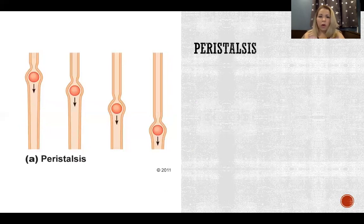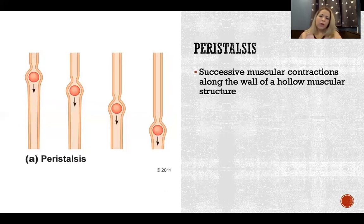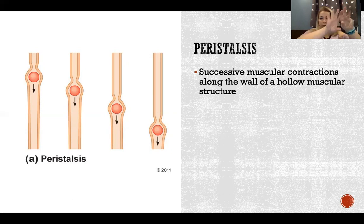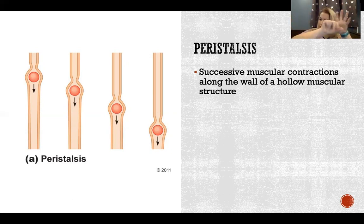Peristalsis is what pushes the contents onward. Peristalsis is the successive muscular contractions along the wall of a hollow muscular structure. Where we have a hollow tube with muscle in the wall, it is capable of peristalsis, where the muscles are contracting along the length of that tube to push the contents onward.